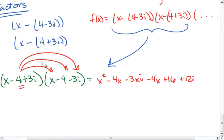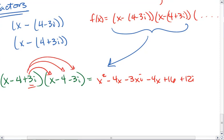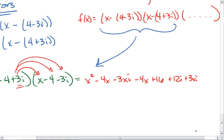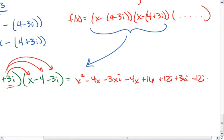And then I take the last term and distribute it. So I get plus 3xi minus 12i minus 9i squared.